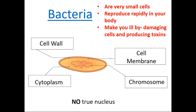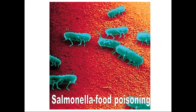When it comes to the structure of bacteria, it's made up of a cell wall and a cell membrane. It has a cytoplasm and a chromosome. Inside the chromosome, you have genetic material, which is passed from one generation to another. It doesn't have a true nucleus — that's why it's called a prokaryotic cell. The picture shows salmonella food poisoning bacteria in magnified form.